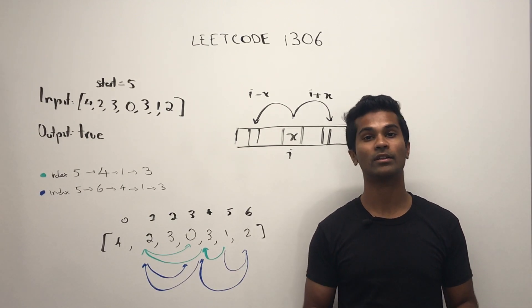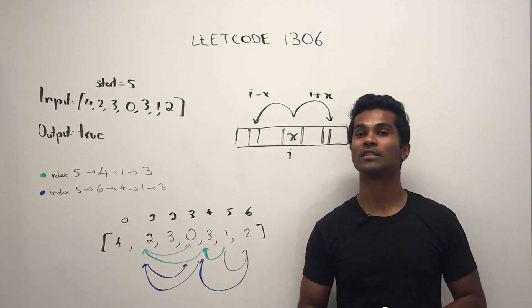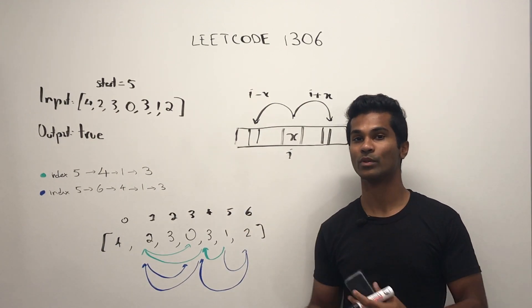Now of course, we're not allowed to jump outside of the array. So anytime we're trying to jump out of it, we just return false.